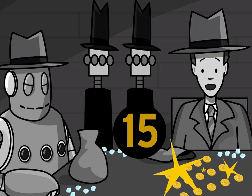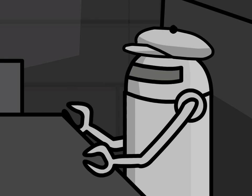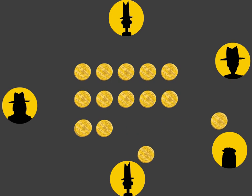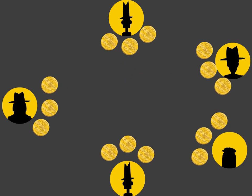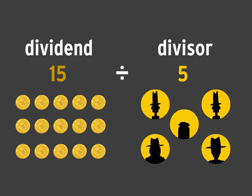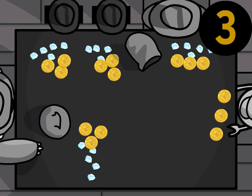Holy mackerel, 15 gold coins! Pretty soon we're all going to be dancing the Lindy Hop on the Queen Mary. Now let's divide them up. Okay, fair is fair — you tipped us off to this big score, so we'll divide these coins up five ways. Now let's see, how many times can we divide 15 by five? Yep, you got it — we can divide 15 coins into five groups of three coins apiece.